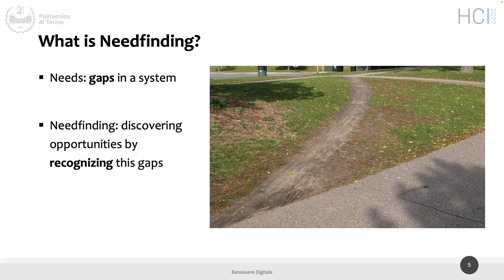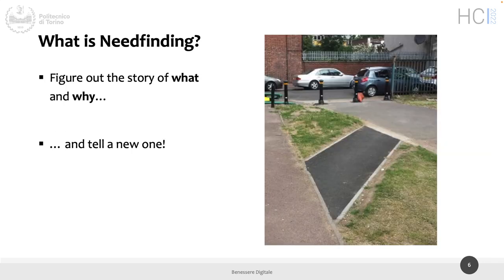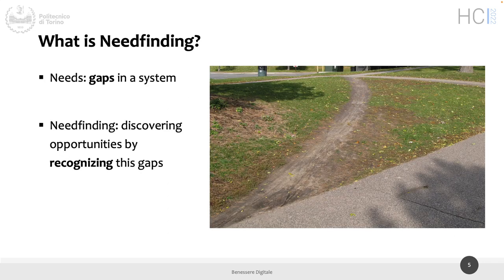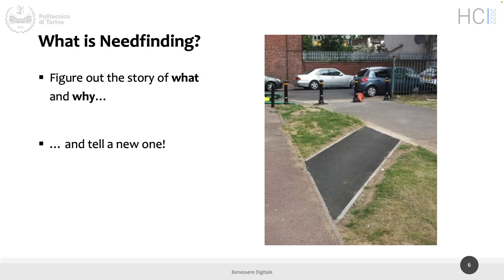Need finding is to figure out the story: what is happening and why. Why are people not using the sidewalk? Because they're lazy? Because the sidewalk is interrupted? Because it doesn't turn the right way, making it a long detour? We don't know in this picture, but the 'what' and the 'why' are central to need finding. Figure out the story of what is happening, and then tell a new story. The main need finding question — which you are not going to ask directly — is: what do users need?